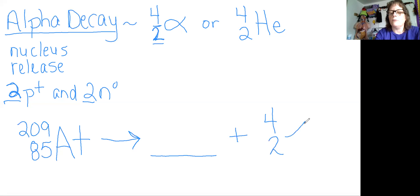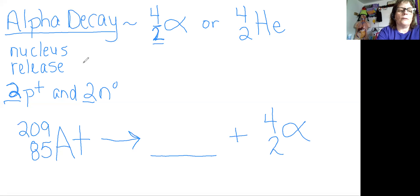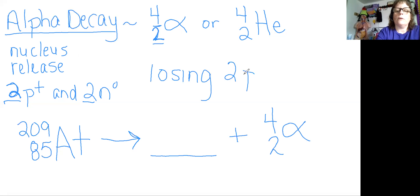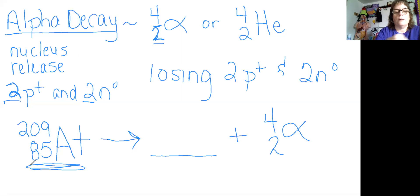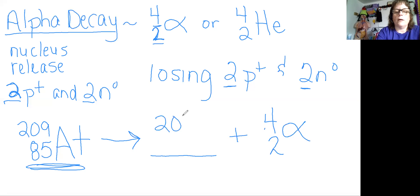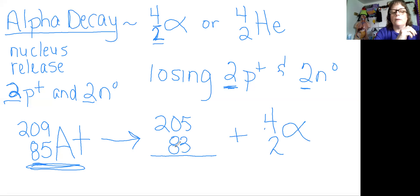You'll look at the equation to see if it has the alpha symbol, and if it does, you know it's alpha decay. The nucleus is going to release — so basically we are losing two protons and two neutrons. For the mass, atomic mass is always neutrons plus protons, so we're losing four from the mass. 209 minus 4 gives you 205 — that's the mass of your new element. We had 85 as our atomic number, so we subtract two protons from the atomic number.